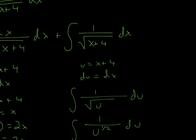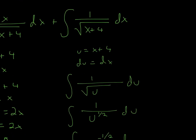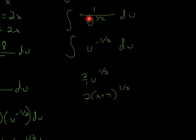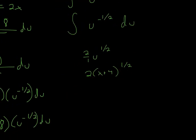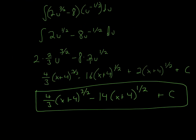Now we do the other integral we split off earlier. We again set u equal to x plus 4 and take the derivative of each side: du equals dx. So we have the integral of 1 over the square root of u, which we rewrite as u to the negative 1/2 du. We move it to the numerator, integrate, add 2/2 to get positive 1/2, and invert to get 2. Replacing u gives 2(x + 4)^(1/2).